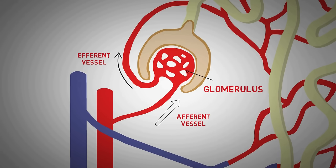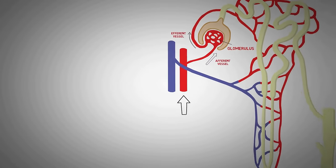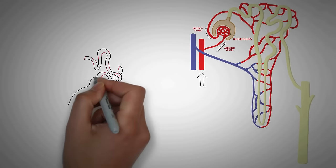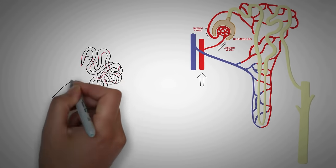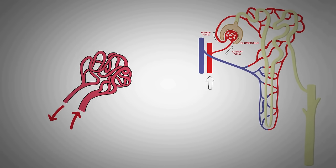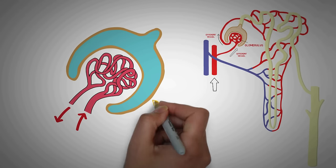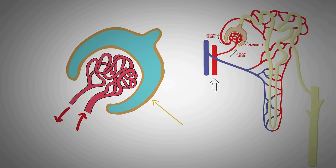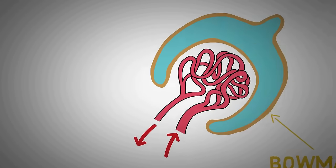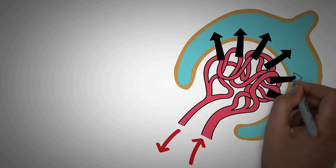As discussed earlier, glomerulus is derived from the word glomer meaning a ball of thread. The glomerulus is a tuft of blood vessels located inside the Bowman's capsule. This tuft greatly increases the surface area for filtration in contact with the Bowman's capsule, and this is where the first mechanism of urine formation — filtration — takes place.